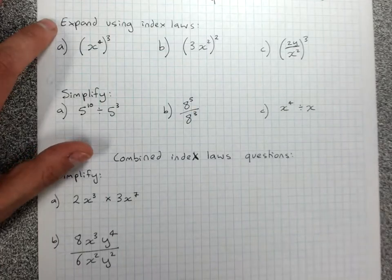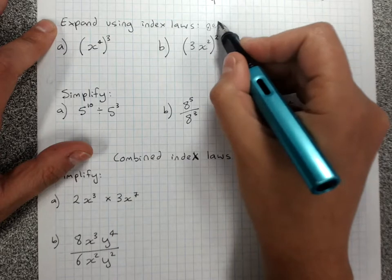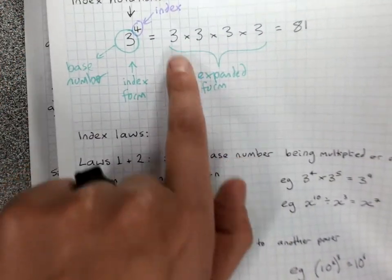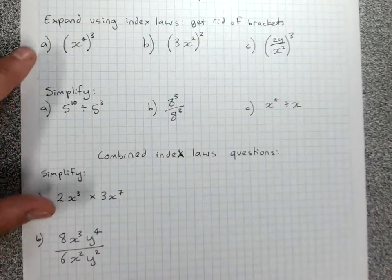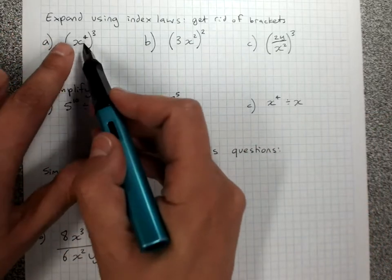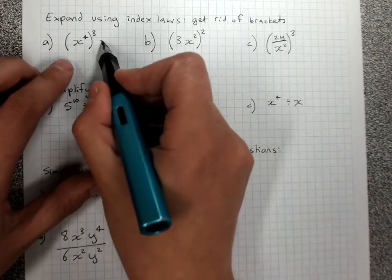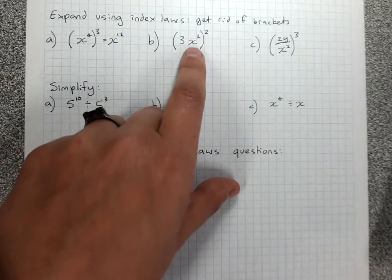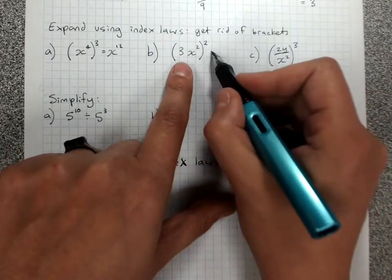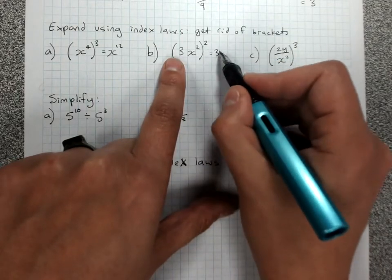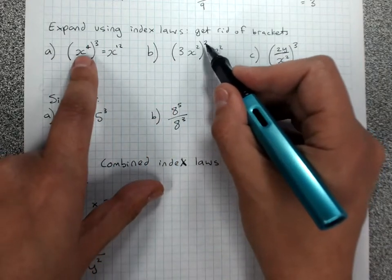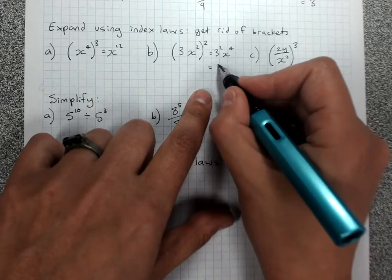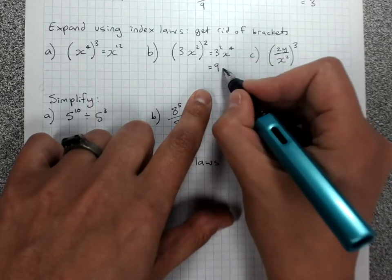When it says to expand using index laws and there are brackets, it means use the index laws to get rid of the brackets. It doesn't mean expanded form unless it says write in expanded form. So expand using index laws means get rid of the brackets with the index laws. Power to a power — index law 3 — multiply the indices, keep the same base number: x to the 12. Things in a bracket raised to a power — a product — that's index law 4. Each gets raised to the power 2: 3 squared, and x squared squared goes back to multiplying the powers, giving x to the 4. The number power evaluates to 9, so the answer is 9x⁴.